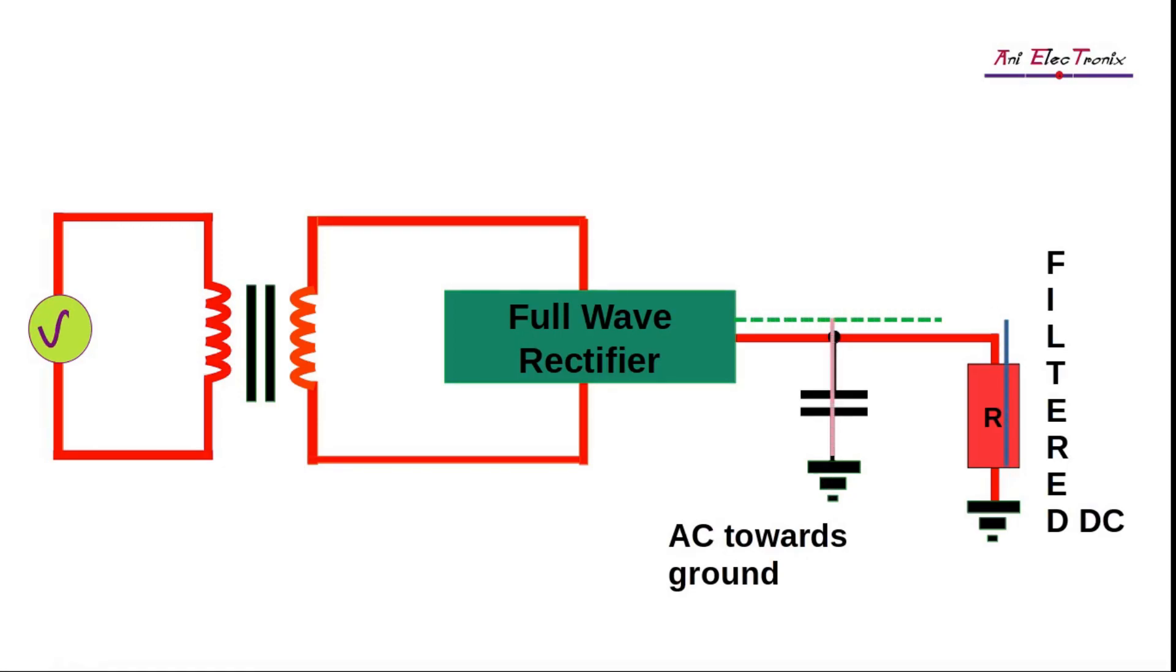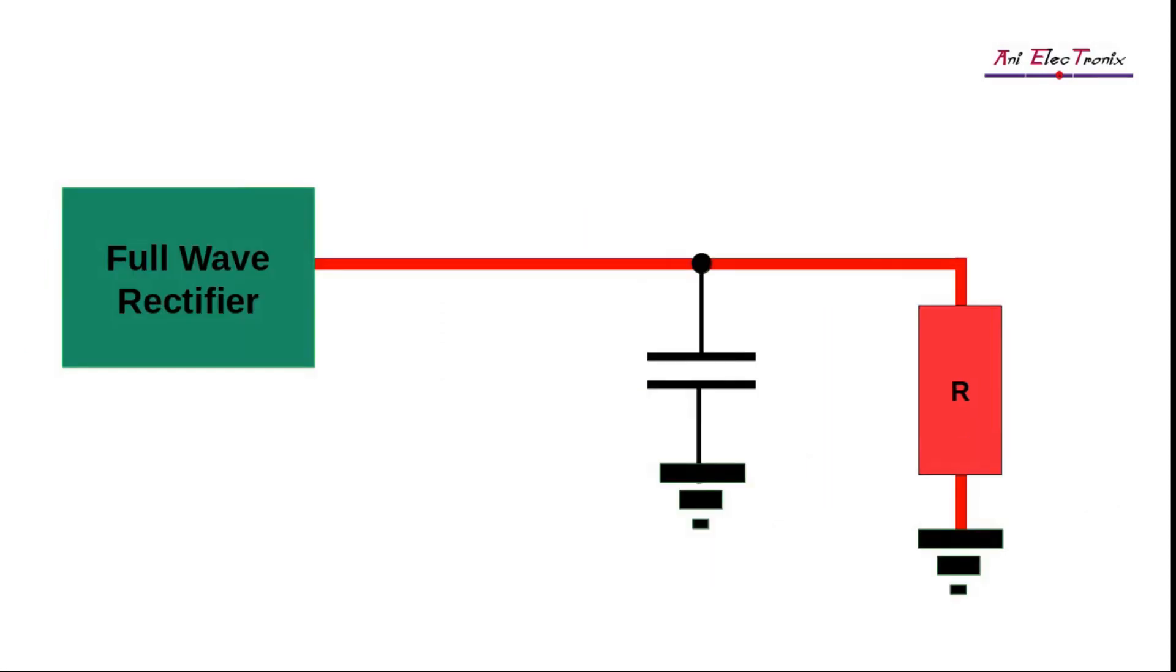We now need to understand how the capacitor filter works. We will be discussing full wave filtering. Consider Vp as the maximum or peak value of the rectifier output voltage.